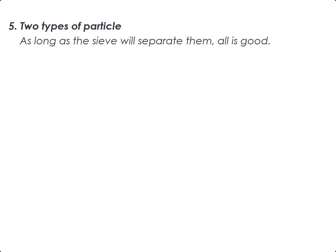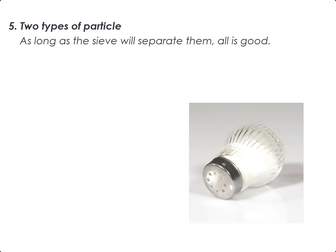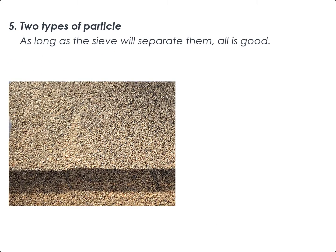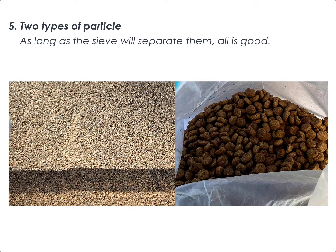We need two types of particles. In the original workshop, we used fine grain table salt and kidney beans. Today, I am using play sand and dog kibble. If you want to play along at home, you can use any two types of particle so long as they are dry and easily separated using a sieve.